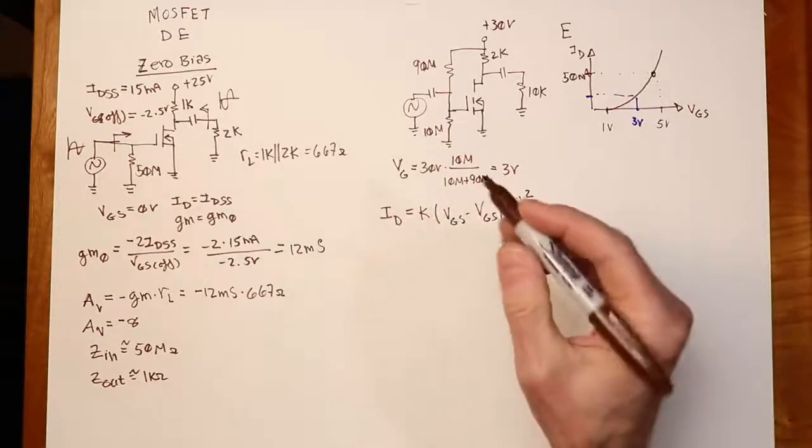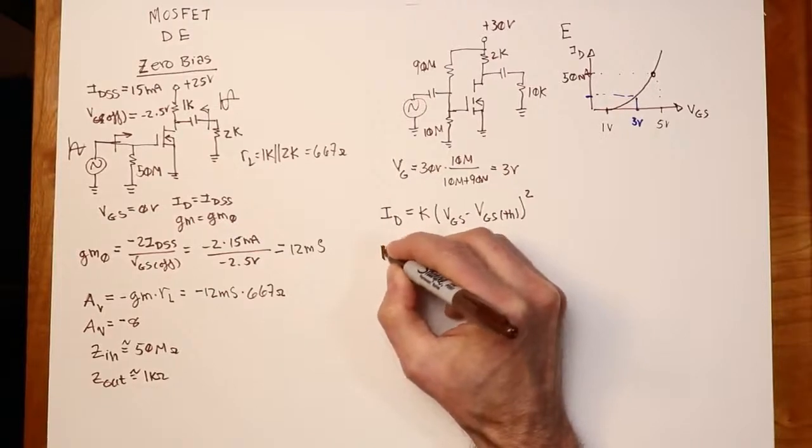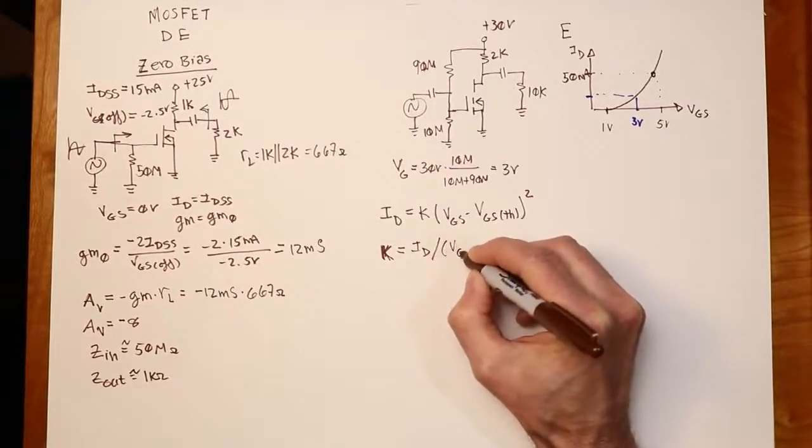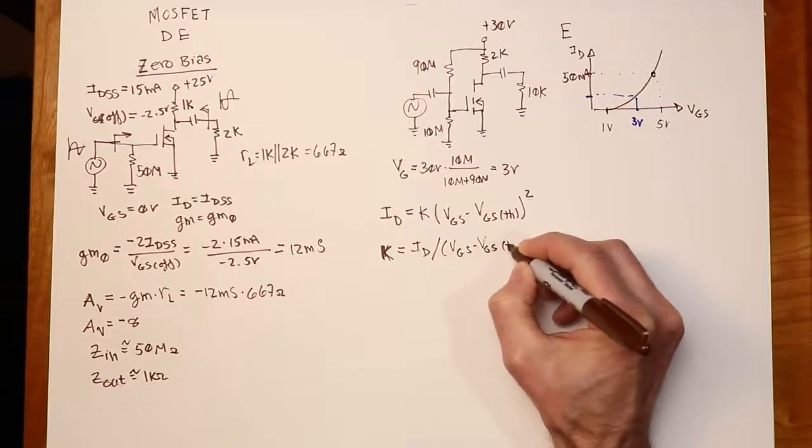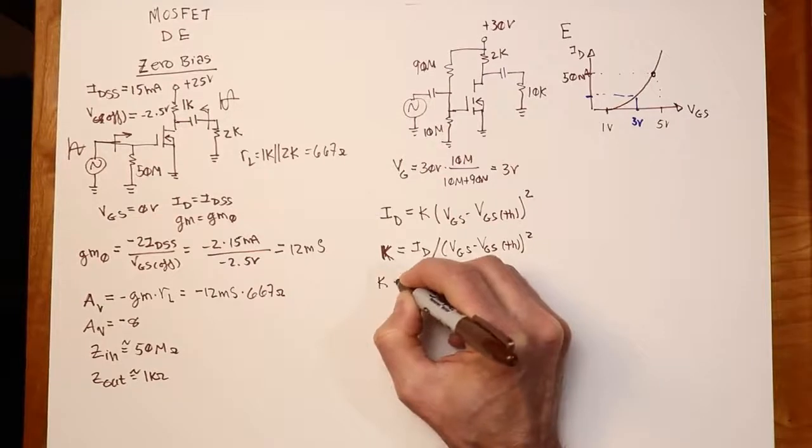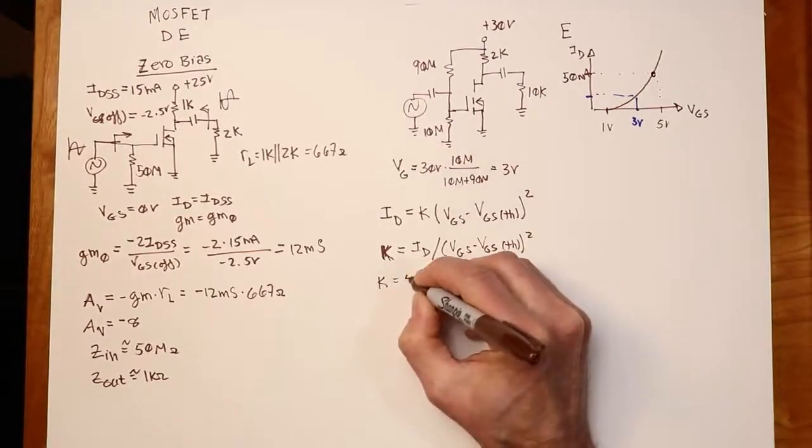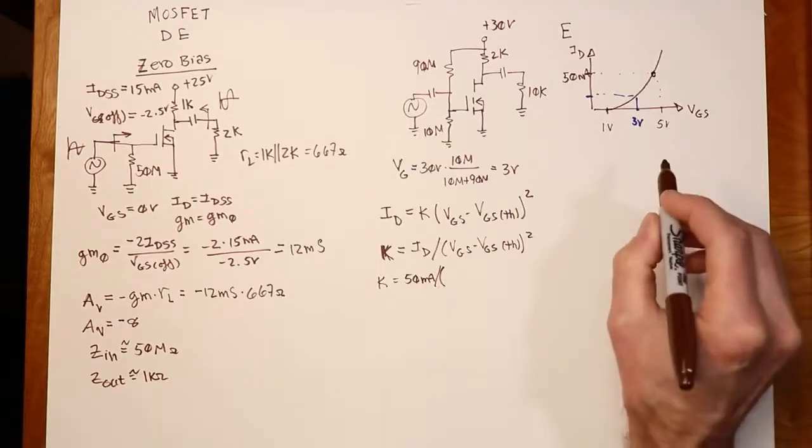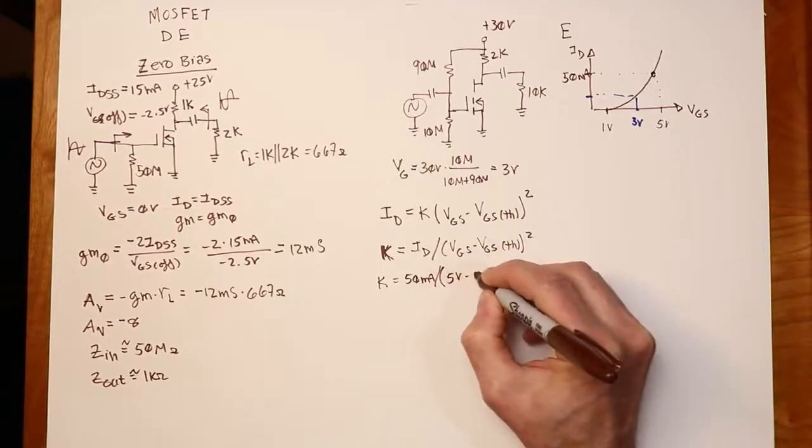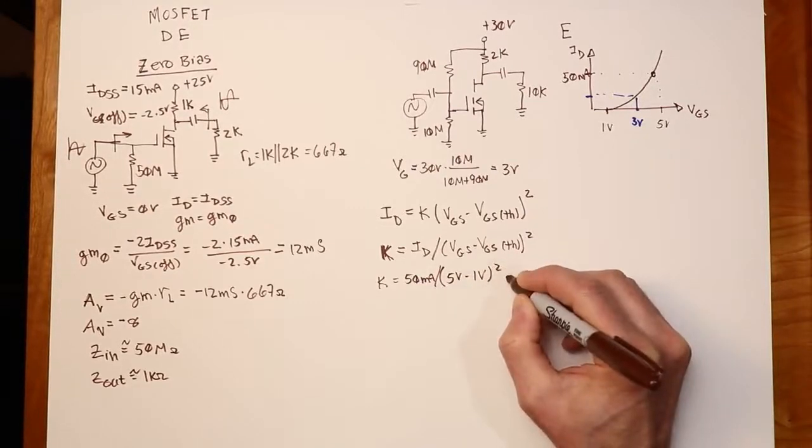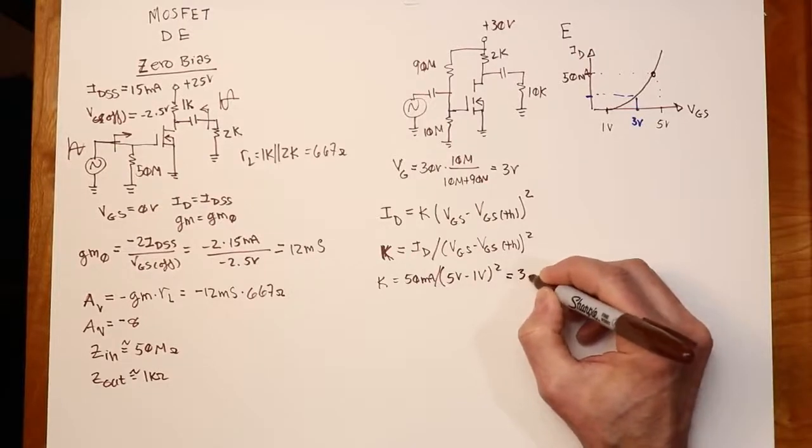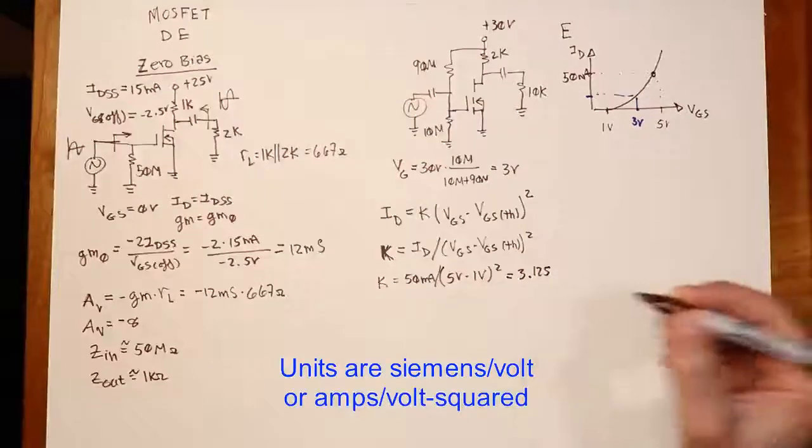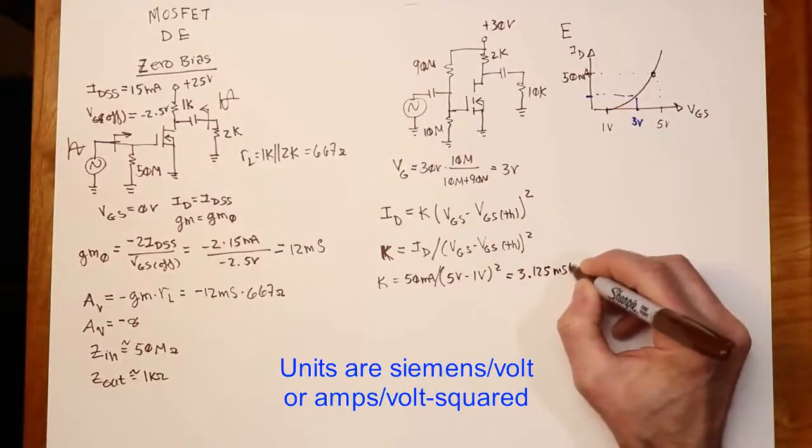Oops. So K is going to equal ID divided by that quantity. And then we just plug the numbers in. All right. So the on current that we have is 50 mils. The VGS value we have is 5 volts. Threshold was 1 volt. Square that up. And your K is going to equal 3.125. You can call that millisiemens per volt or milliamps squared per volt, whichever one works for you.